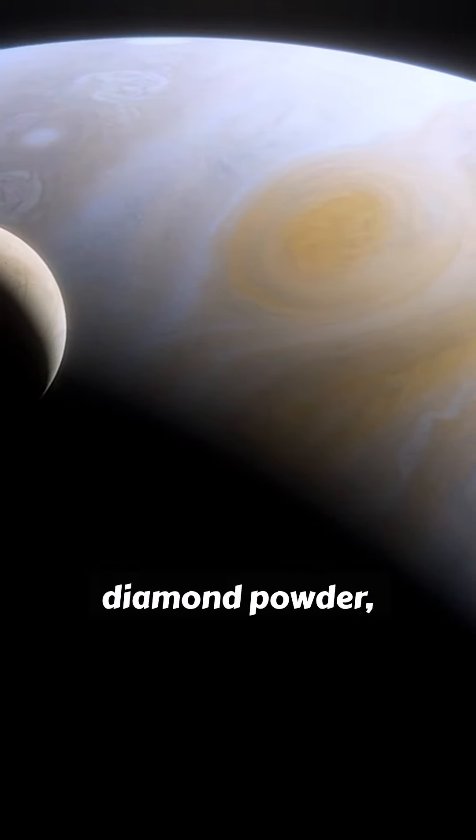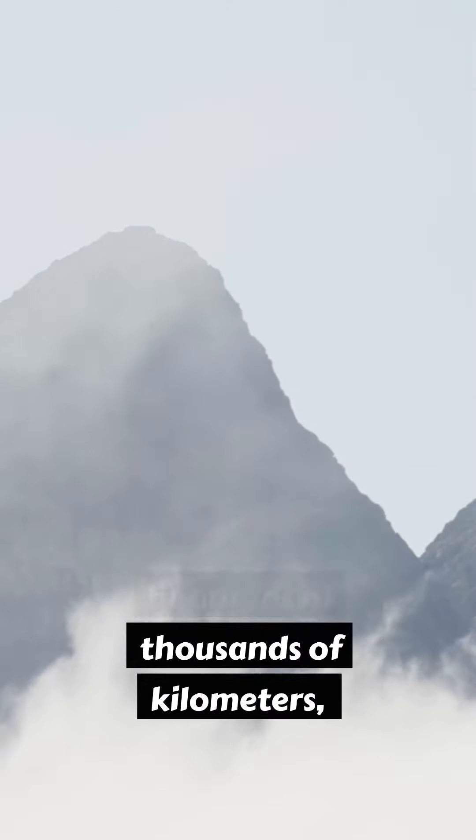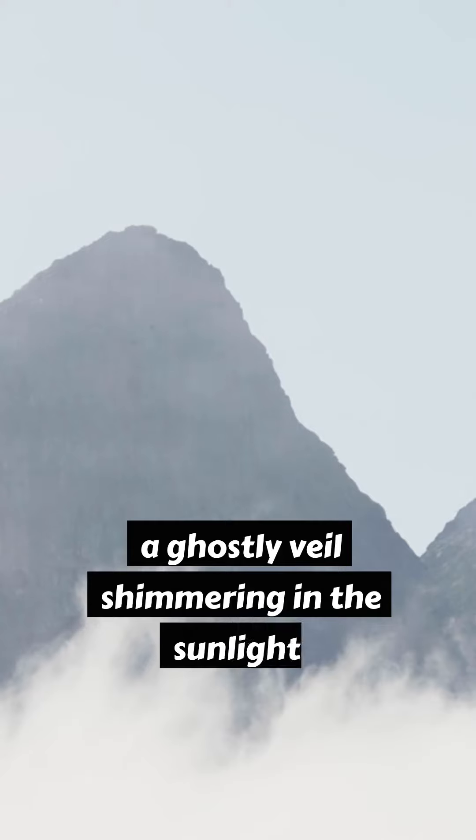This dust, fine as diamond powder, paints a delicate halo around Jupiter. It stretches for hundreds of thousands of kilometers, a ghostly veil shimmering in the sunlight.